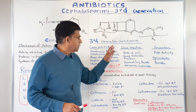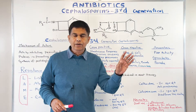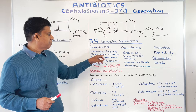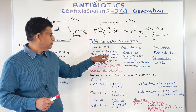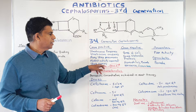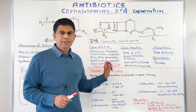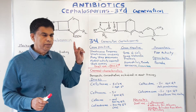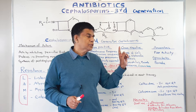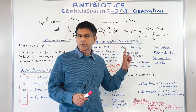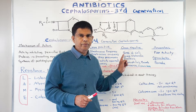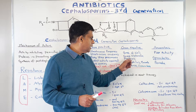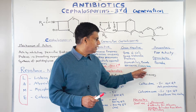Third generation cephalosporins have broad-spectrum activity. For gram-positive: Streptococcus pyogenes, Streptococcus viridans, Strep pneumoniae, and modest activity against Staph aureus — never use it against methicillin-sensitive Staph aureus, it's not going to work. For gram-negative, it works against most organisms: E. coli, so ceftriaxone is very good for urinary tract infections, Proteus, Haemophilus, Moraxella, and Neisseria gonorrhoeae.